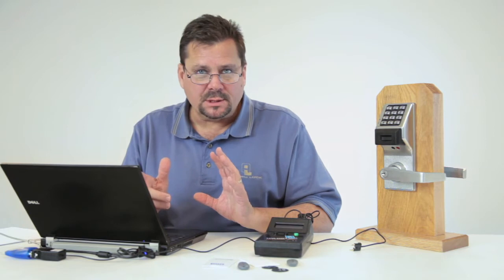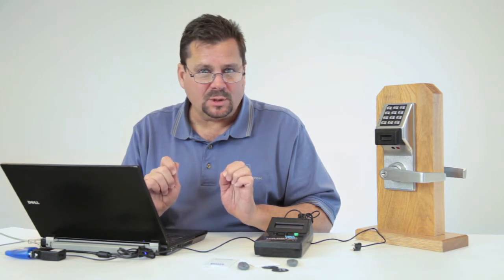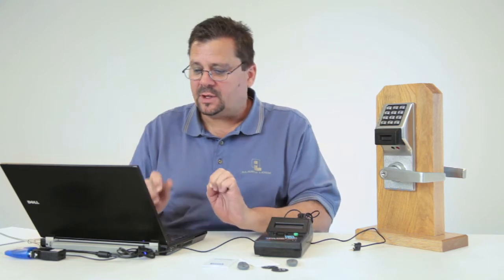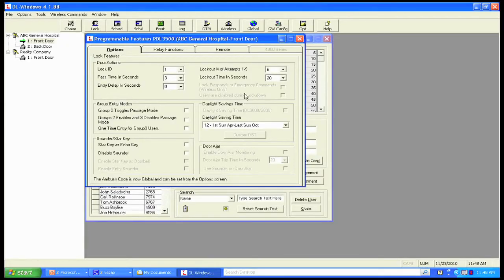Or in certain instances, what we want to be able to have happen is we want group two to unlock the door, but someone else to relock it. That would be that function there. We also can set the lockout attempts. In other words, after six attempts, the keypad locks out in 20 seconds. And what that tells me, because it records a keypad lockout on the auditor, that someone's been sitting there playing with the lock.